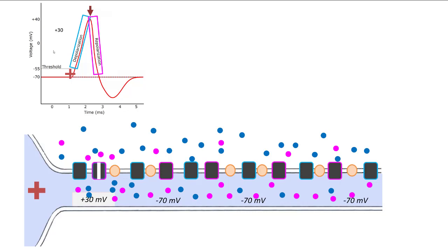Once the cell returns to minus 70, the pump brings back two potassium into the cell and sends out three sodium to restore the proper balance. This region of the action potential graph is known as hyperpolarization because the voltage goes past the normal resting membrane potential — this dip occurs during the time we're rebalancing sodium and potassium via the pump.